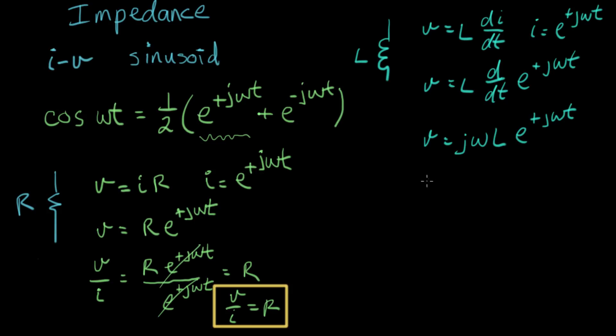So we get j omega L times what? Times the same thing, e to the plus j omega t. This is the beautiful thing about exponentials. They give us back themselves. Now let's take, once more, what's the ratio of voltage to current? And that equals j omega L times e to the plus j omega t, and let's divide that by I, which is e to the plus j omega t.